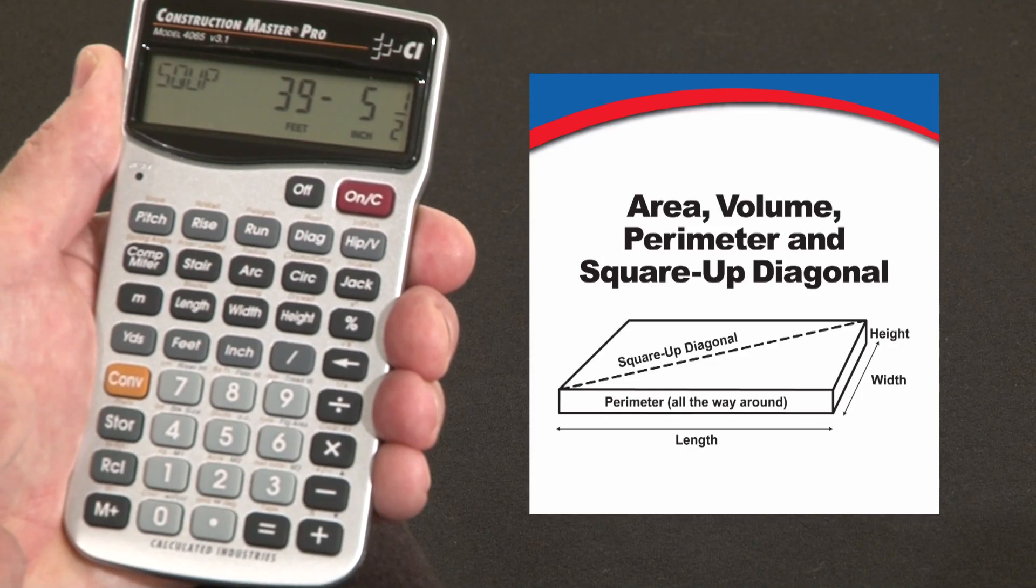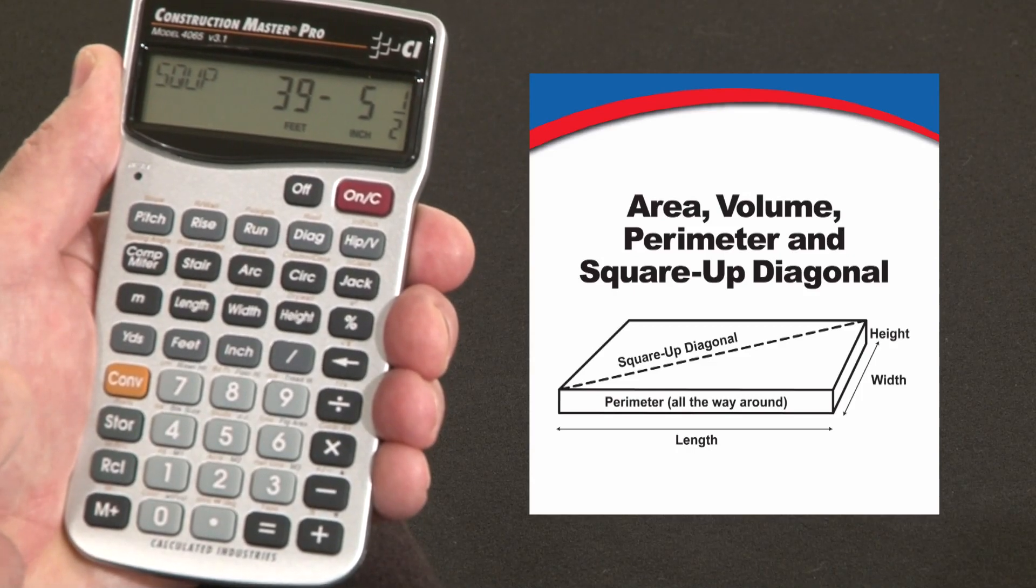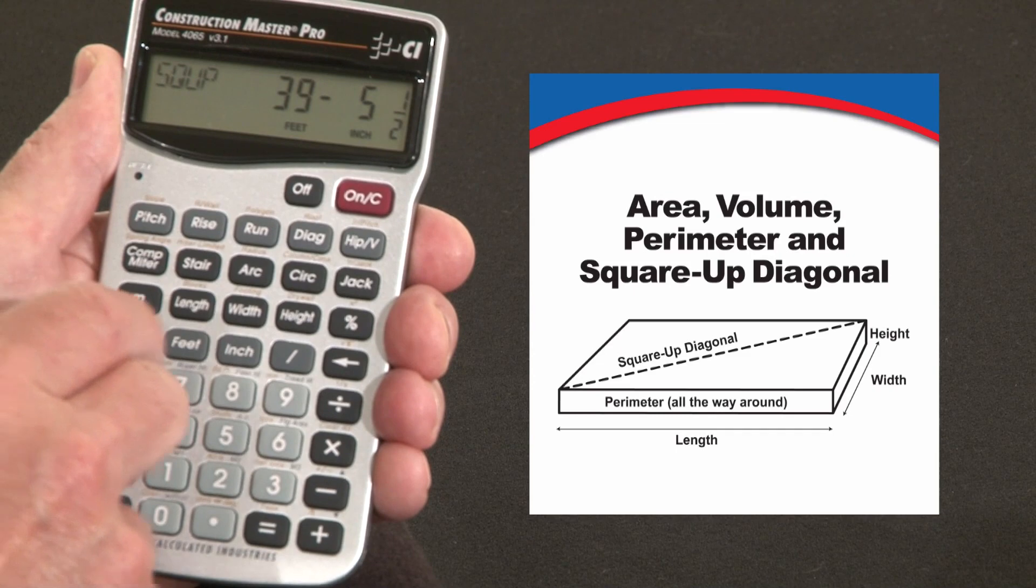So if you're going to be setting forms or pulling a tape, that's what you want to measure to get square 90-degree corners.